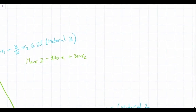But first, we need to find where the objective function intercepts with the x1 and x2 axes. So we're just going to pick an arbitrary amount of profit. In this case, we'll say 1200 is equal to 40x1 plus 30x2.